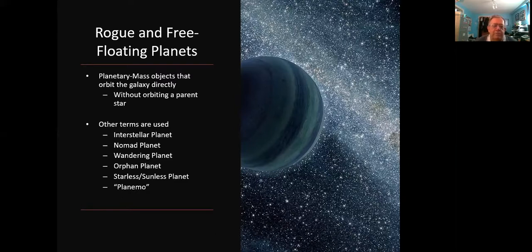Orphan planets. Well, that implies it had a parent and lost it which might not be true. Starless or sunless planets. And the worst of all, planemo. I really hate that. So I call them rogue planets, which makes them sound much more intriguing.